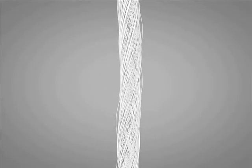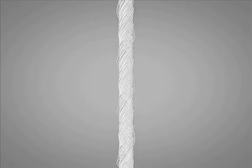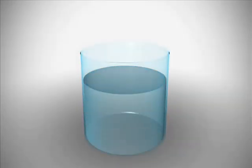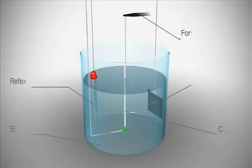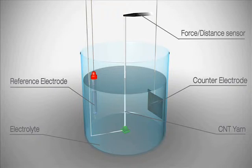The yarn diameter is between 10 and 100 micrometers, and up to 30,000 turns per meter is possible. When a length of yarn is tethered at both ends and half immersed in a liquid electrolyte, and connected to a counter electrode and a reference electrode,